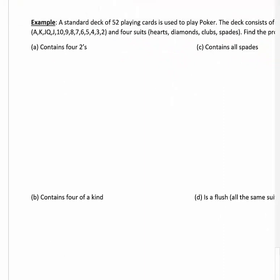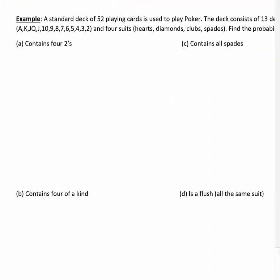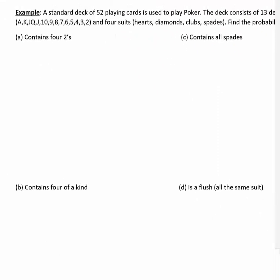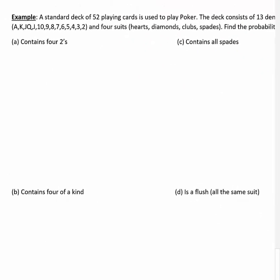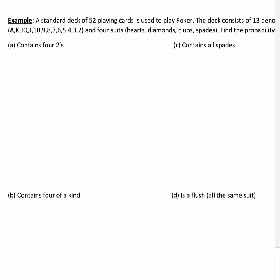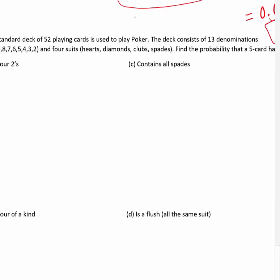Now back to cards - where else do you gamble in a casino? A standard deck of 52 playing cards is used to play poker. In poker you get 5 cards dealt, and order doesn't matter.